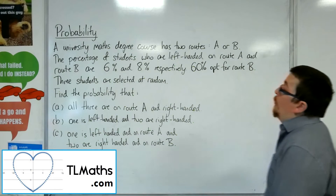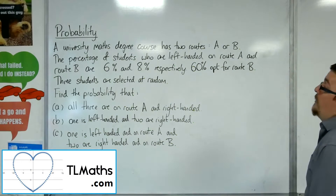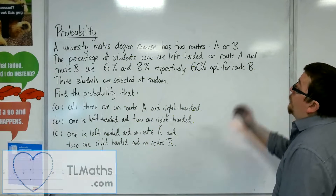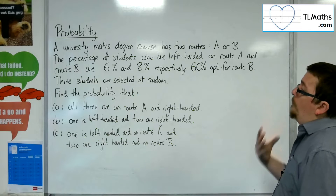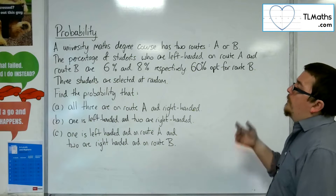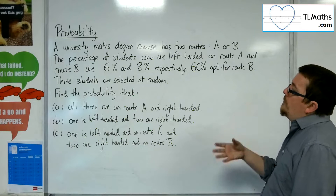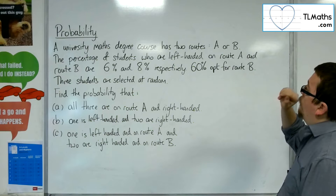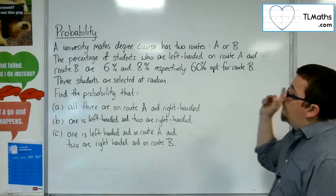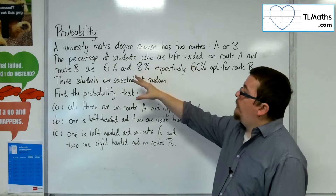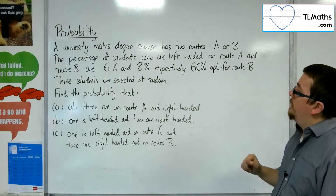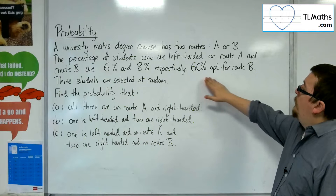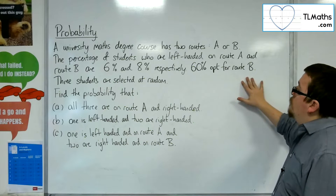In this problem, a university maths degree course has two routes through, A or B. The percentage of students on the degree course who are left-handed on route A and route B are 6% and 8% respectively. 60% opt for route B.